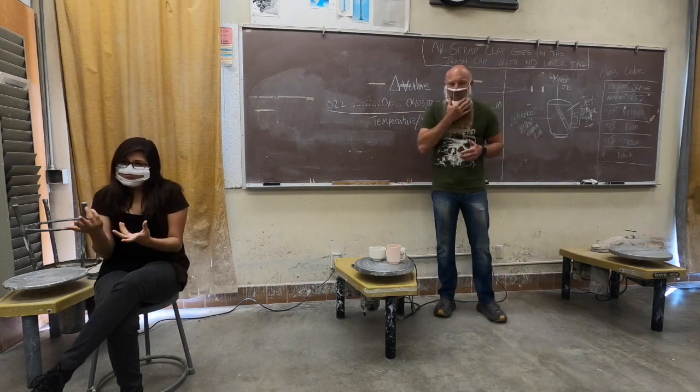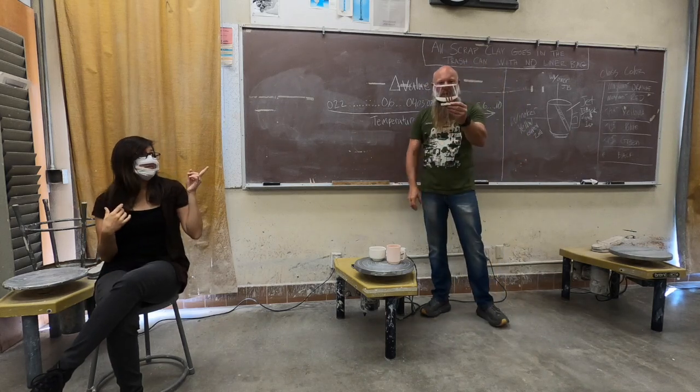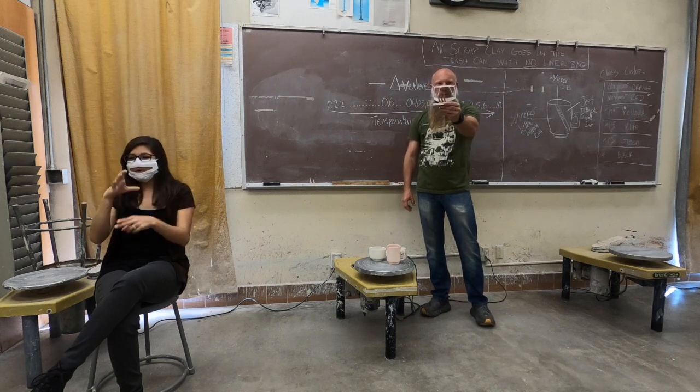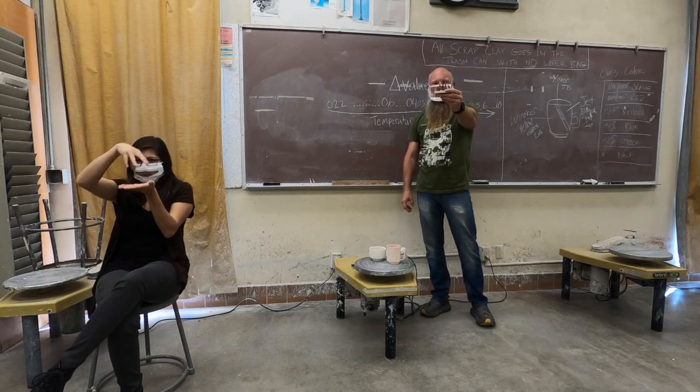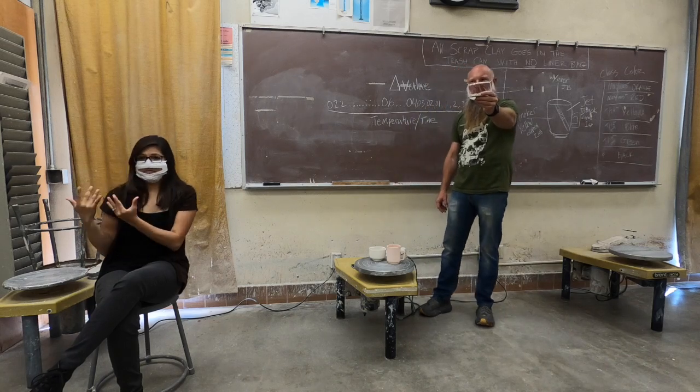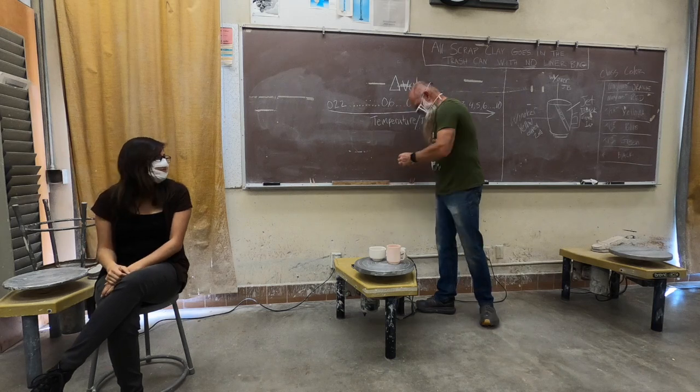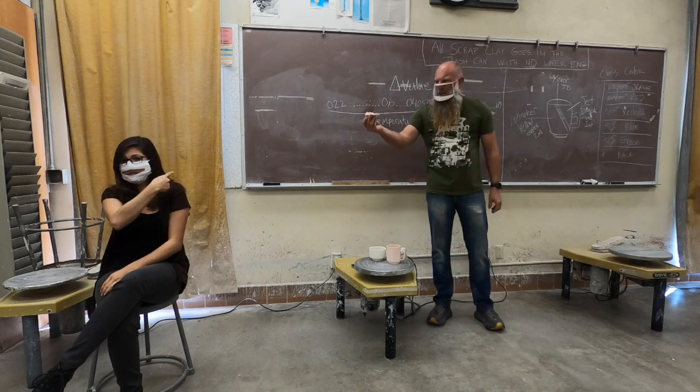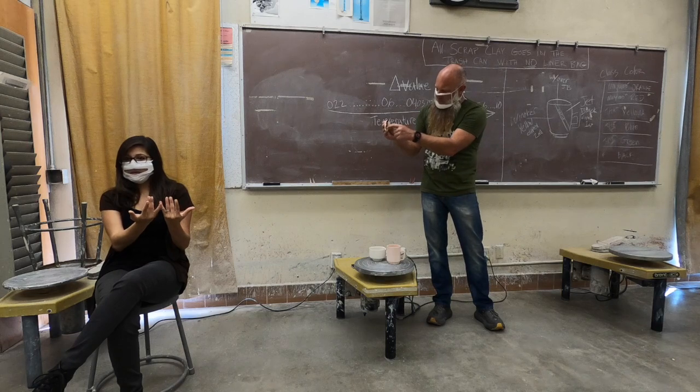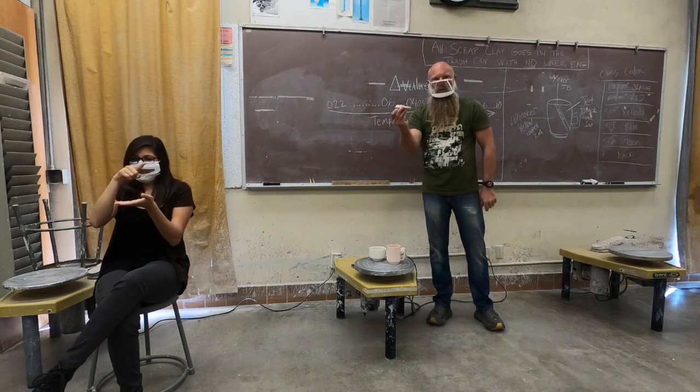So those numbers are not necessarily used. Instead, what we use is we use cones. And I've got these cones. This is why we call them cones is because they're physically cones, right? This is a cone pack that's been made that hasn't been fired. So all the cones are upright. This is one that has been fired.